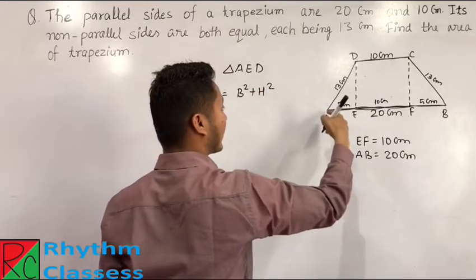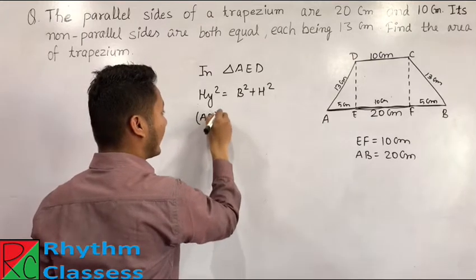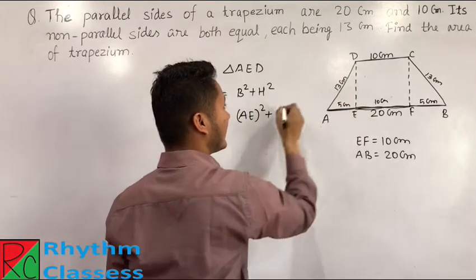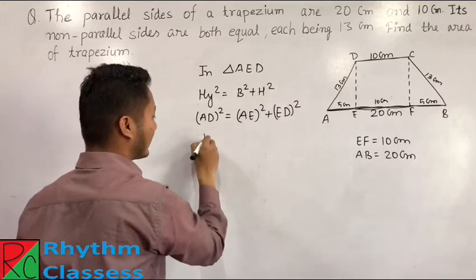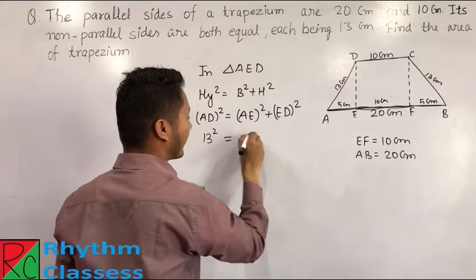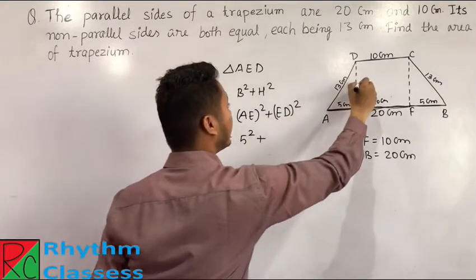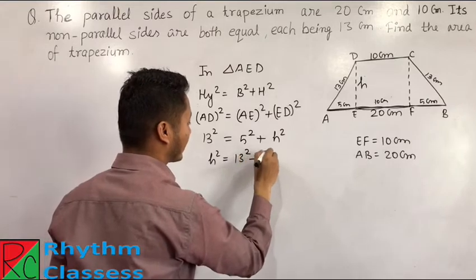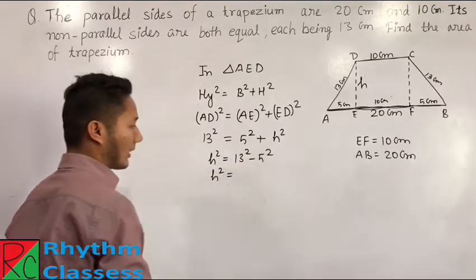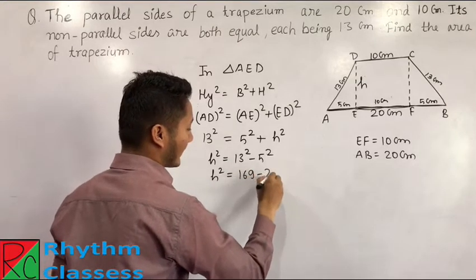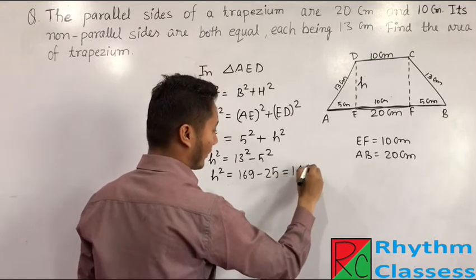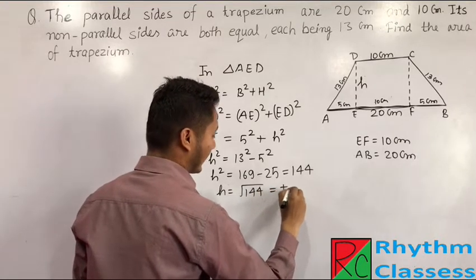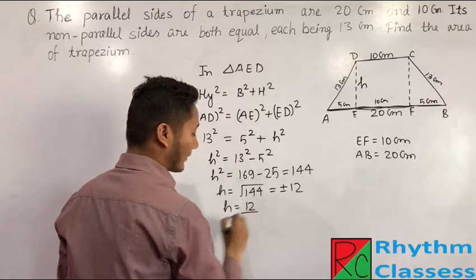We apply the theorem: AD² = AE² + ED². That gives us 13² = 5² + H². So H² = 13² − 5² = 169 − 25 = 144. Therefore H = √144 = 12 cm. We now have the perpendicular height of the trapezium as 12 cm.